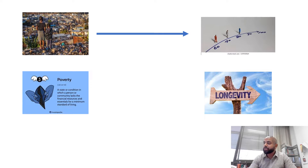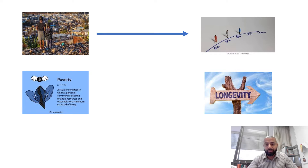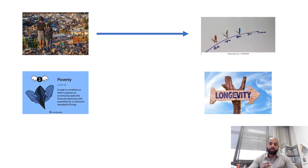Longevity refers to the age of a person, or how long they are alive. Higher longevity means they are alive for a longer time, and low longevity means they are alive for a shorter time. So here, poverty becomes the independent variable and longevity becomes the dependent variable.